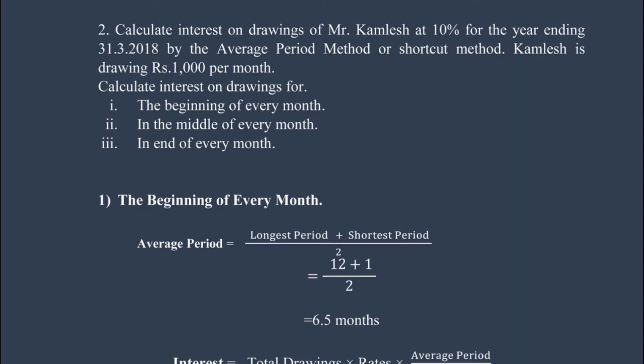Hey, welcome back to the series on accountancy Chapter 2: Accounting for Partnership, Basic Concepts. Again, one simple problem. This problem has one or two twists compared to the last one — it's not at the beginning of the month, but in the middle, and every month. So let us try to solve it in an easy way and analyze the problem.